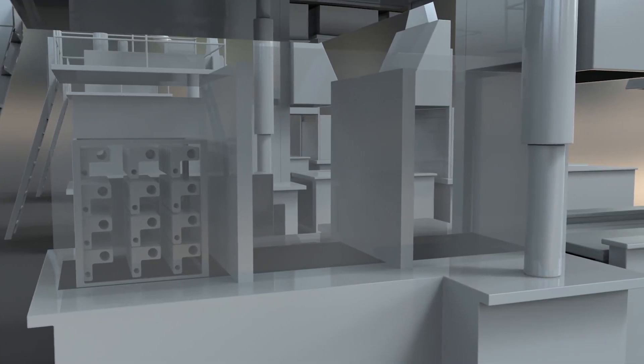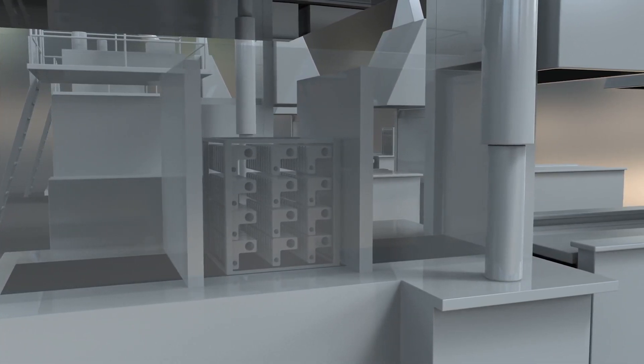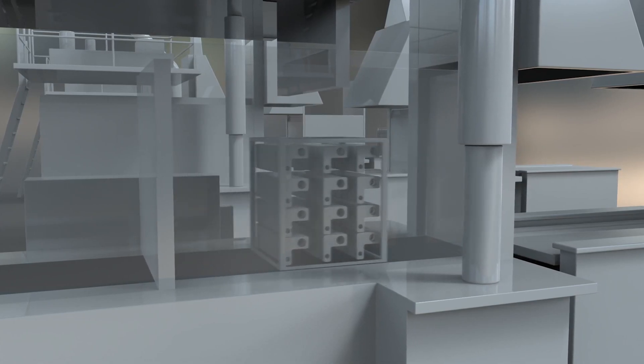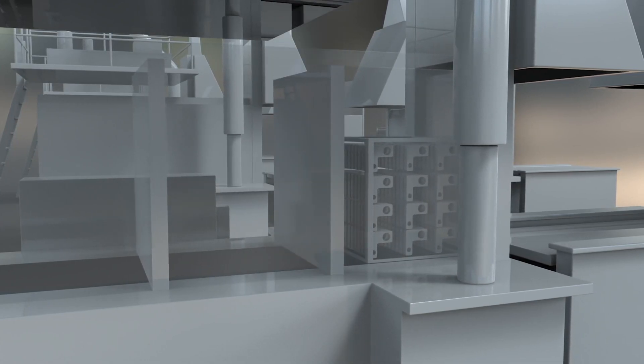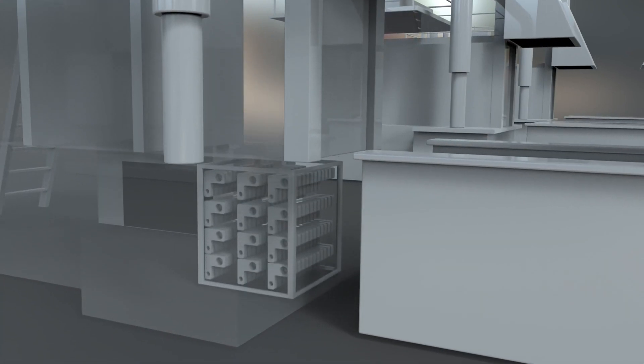Once austenitization is complete, the basket moves back into the intermediate washing chamber, without coming into contact with the external environment, then returns to the vestibule, and finally descends into the salt bath for the hardening operation.